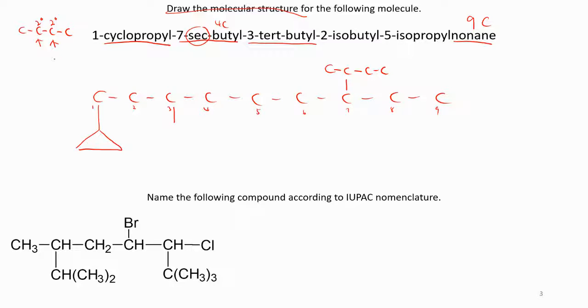Tert-butyl means tertiary. If let's say you have four carbon, how you can arrange it into tertiary? One, two, three tertiary. So this one, one, two, three. So this is tert-butyl. This is sec-butyl.